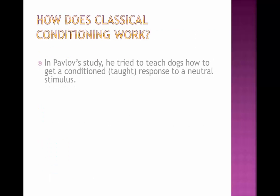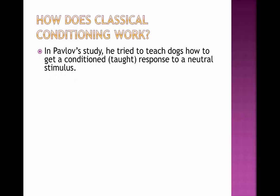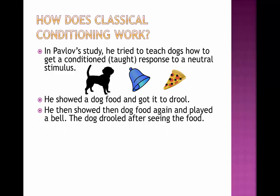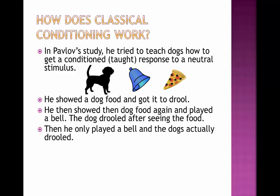So how does classical conditioning work? In Pavlov's study, he tried to teach dogs how to get a conditioned response from a neutral stimulus. A conditioned response is one that has been taught — so if you see 'conditioned' anywhere in this video, remember it means taught. A neutral stimulus is one that naturally occurs in the environment. He did this with dogs, bells, and food. He showed a dog food and got it to drool. He then showed the dog food again and played a bell at the exact same time — the dog drooled after seeing the food. Then he only played the bell and the dogs actually drooled when they heard it, because they associated the neutral stimulus with the food. That would be the conditioned response.